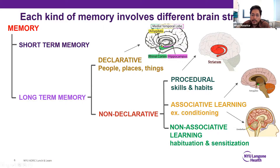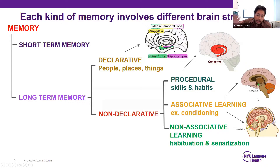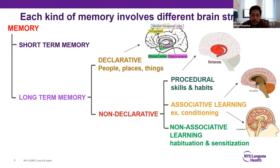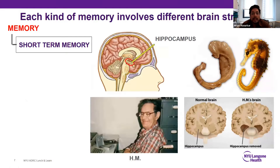Certain kinds of procedural memories, like tying your shoes or learning to ride a bike, relate to the striatum, in the center of the brain. Associative learning can relate to the amygdala — a tiny peanut-sized structure — or the cerebellum at the back of the brain. Most importantly, both short-term memory and declarative memory relate to the medial temporal lobe, made up of many structures including the hippocampus.